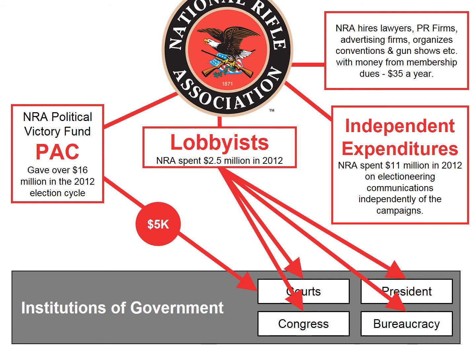In 2012, the NRA's Political Victory Fund gave over $16 million to candidates. However, PACs are limited and subject to regulations, so the NRA cannot contribute any more than $5,000 to an individual candidate. So how else can they influence politics? Well, in 2012 they spent $2.5 million on lobbyists — on hiring those people that actually work at the Capitol Building in Washington, D.C. and try to have an impact on policy.